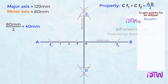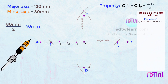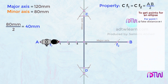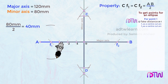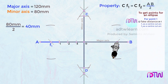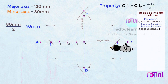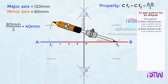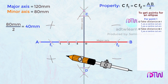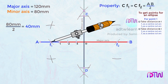Take the length between points A and 1 on the compass, and using F1 as the center, cut arcs on both sides. Using the same length, take F2 as the center and cut arcs on both sides. Next, take the distance between points B and 1, use F2 as the center and cut arcs on both sides. Using the same length, take F1 as the center and cut arcs on both sides.